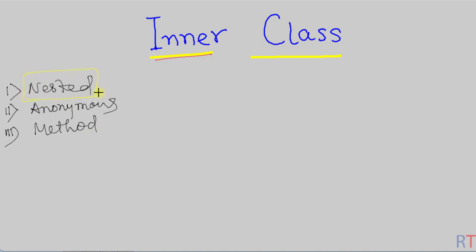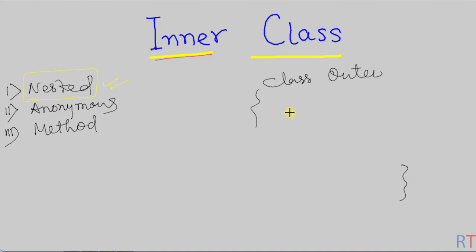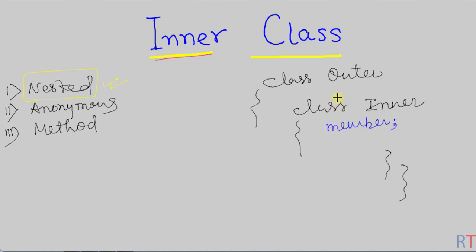Nested inner classes are direct members of some outer class. For example, if we have one class called outer, then inside the outer class we can have some direct nested inner class — like one class called inner — which is the direct member of the outer class. The inner class can have its own members.